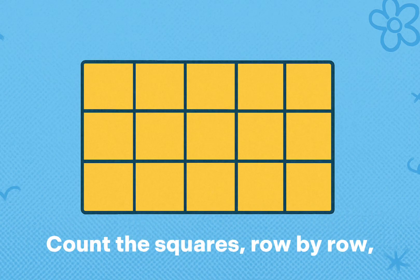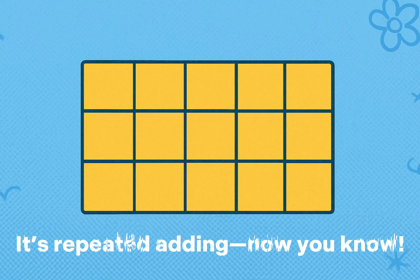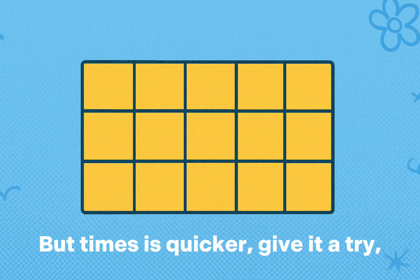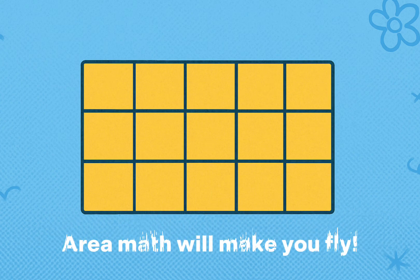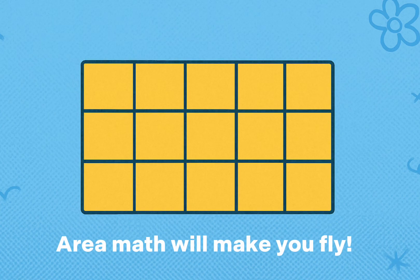Count the squares, row by row — it's repeated adding, now you know. The time is quicker, give it a try. Area math will make you fly.